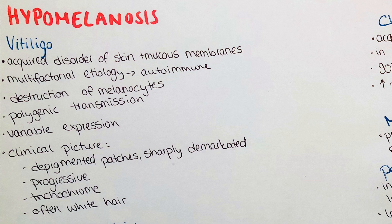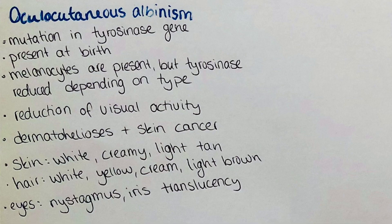The next hypomelanotic disorder is oculocutaneous albinism. It is actually a group of disorders rather than a single disease. It affects the skin, hair and eyes, which present with a reduction or complete lack of melanin. It is a genetic disorder in which patients have a mutation in the tyrosinase gene, which is responsible for the production of melanin in the melanocytes. So the melanocytes are present but non-functional, while in vitiligo the melanocytes are destroyed.